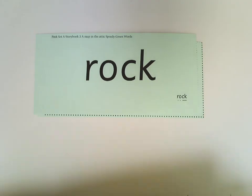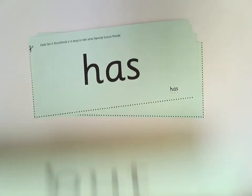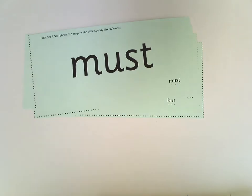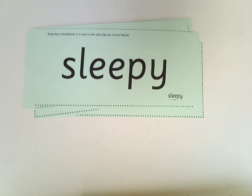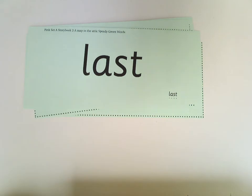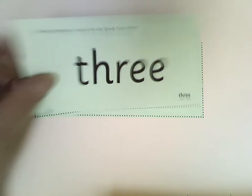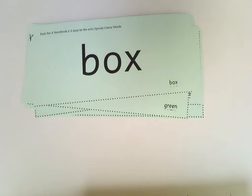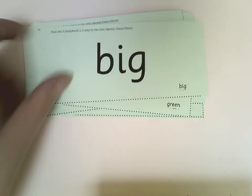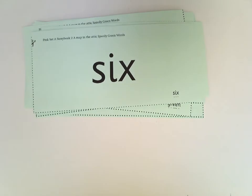All right, I'm going to give them a shuffle. We'll do them faster this time. Swimming. Rock. Off. As. But. Must. With. Sleepy — you're not sleepy, you're wide awake, keep going. Last. Next. Three. Green. Box. Nearly there — this. Big. Six. Well done.